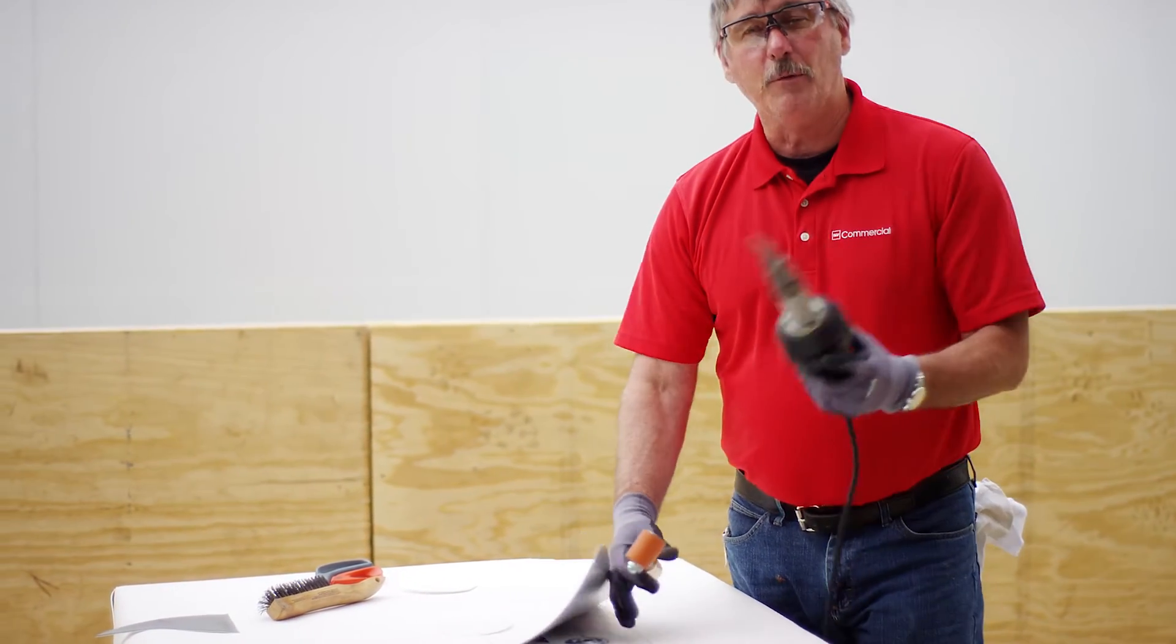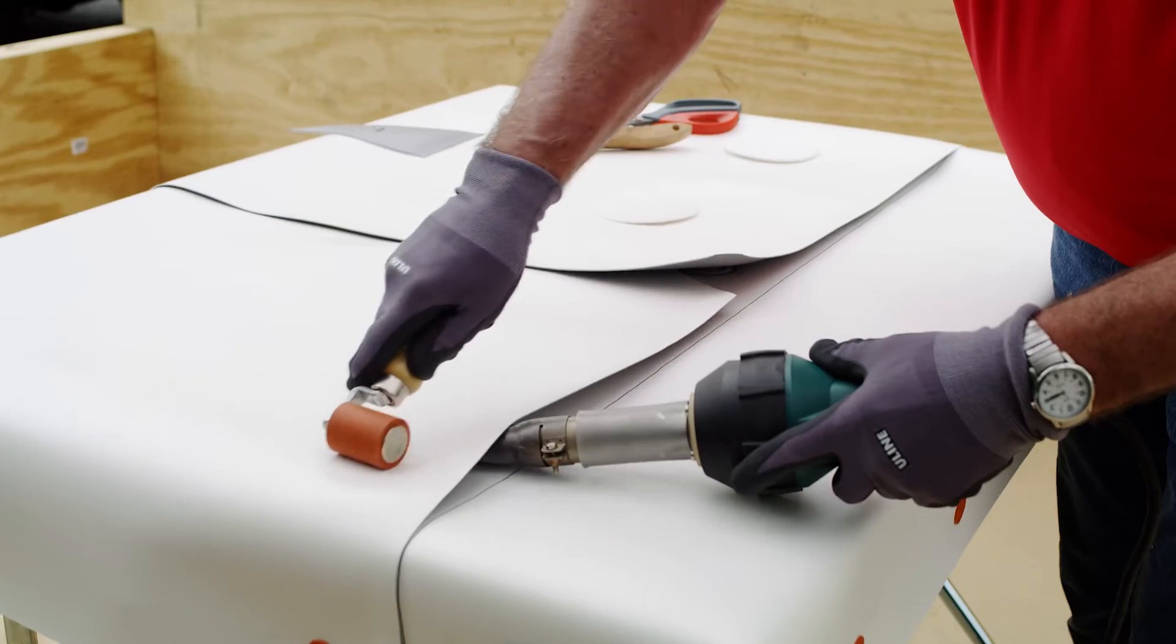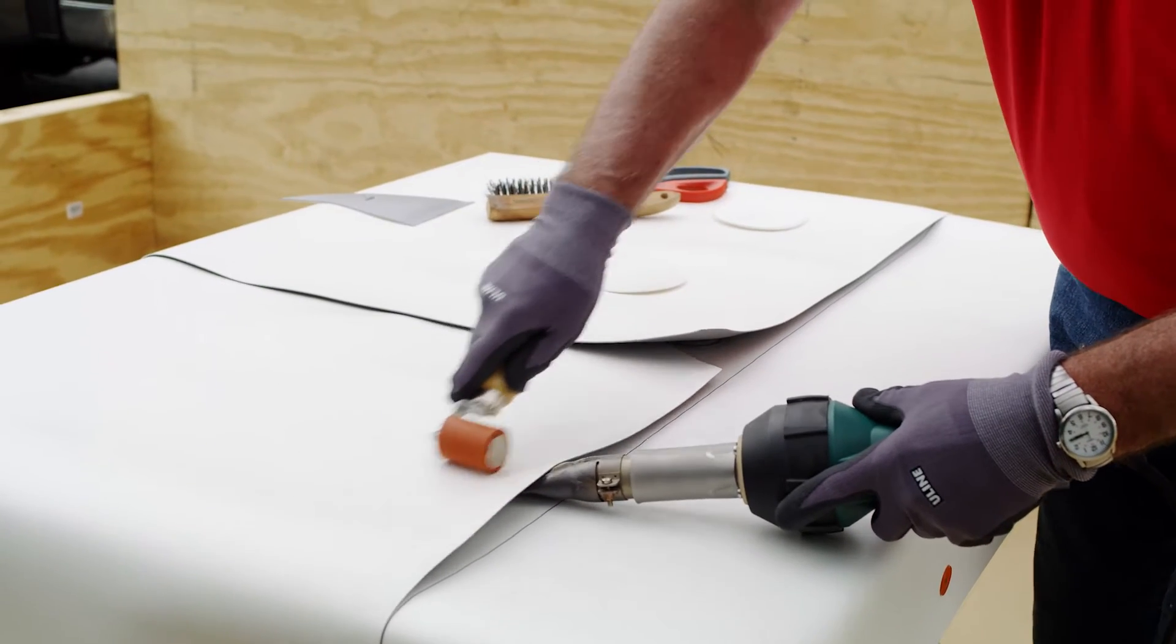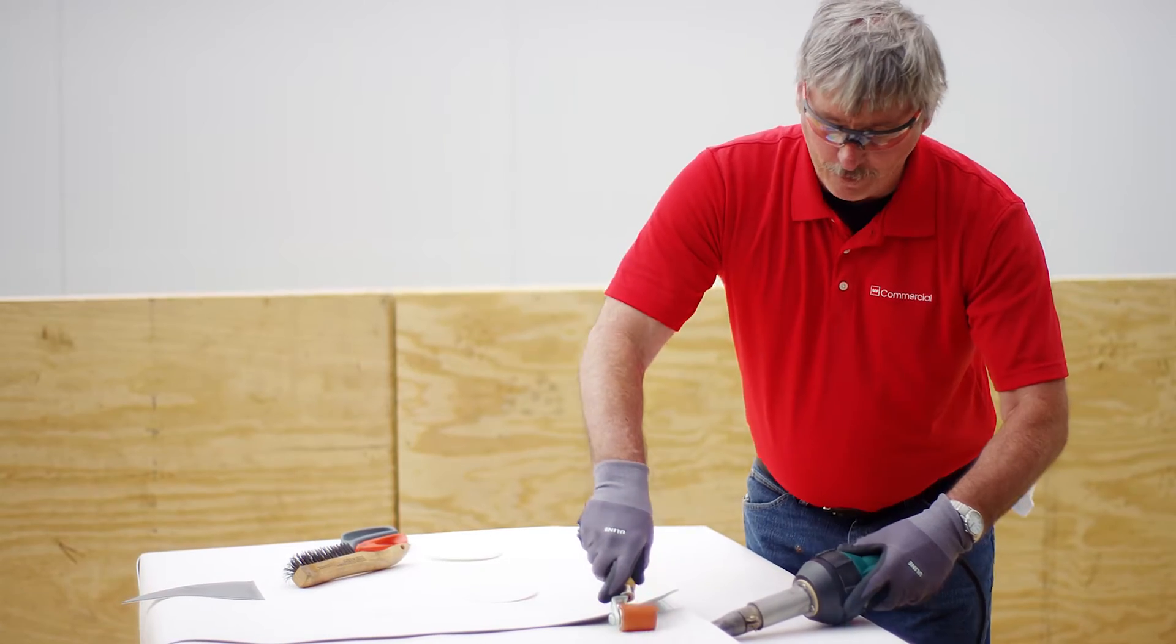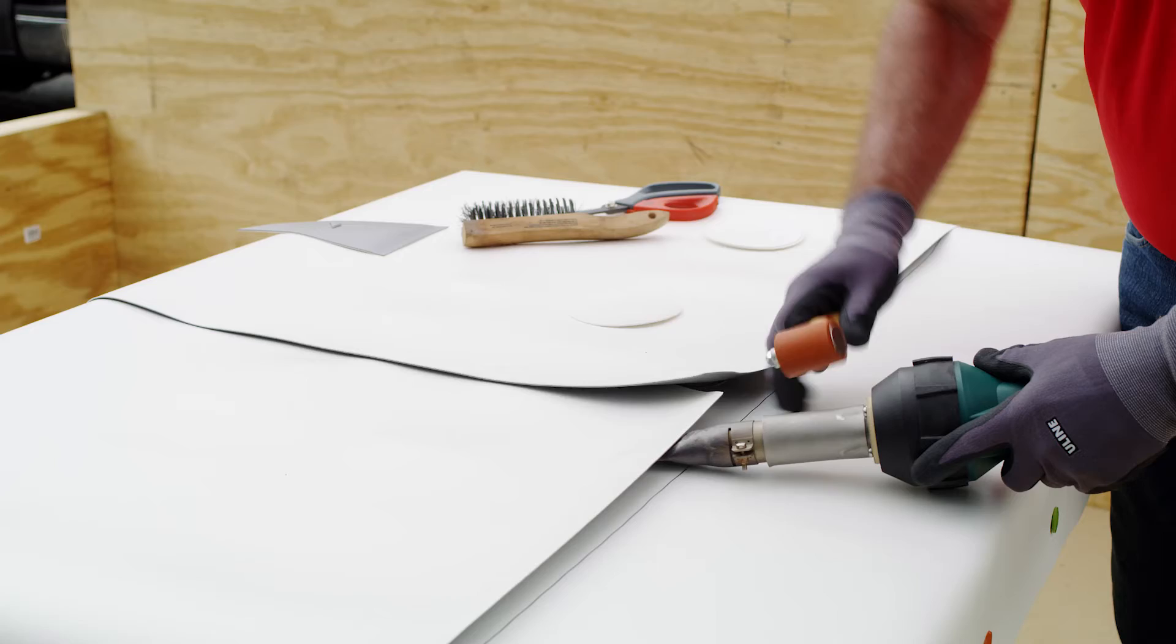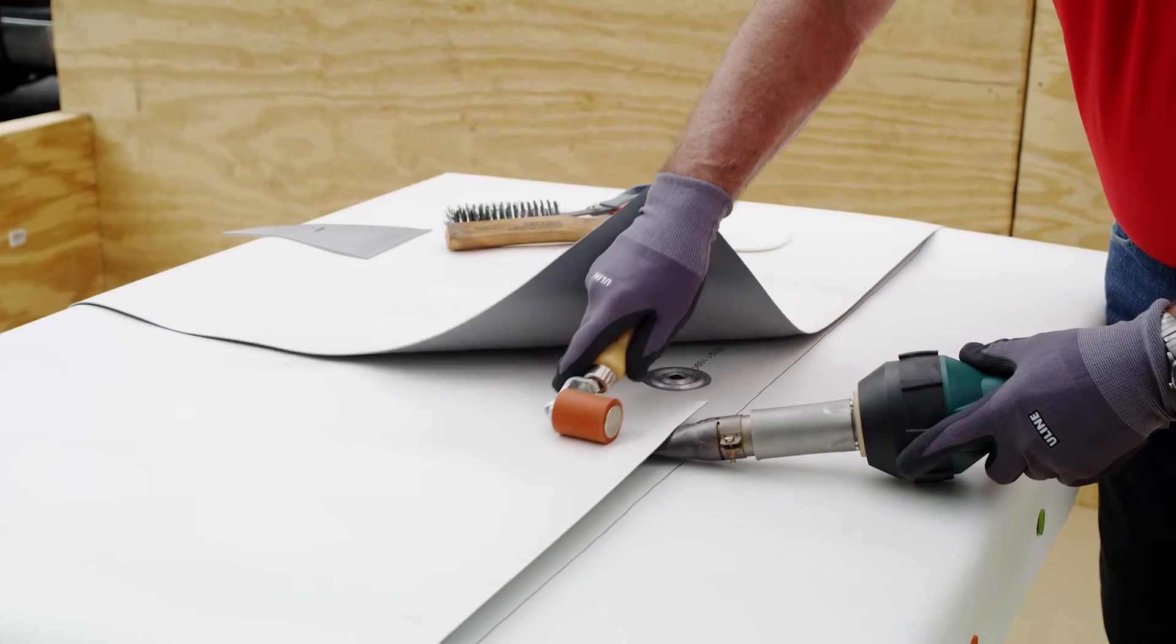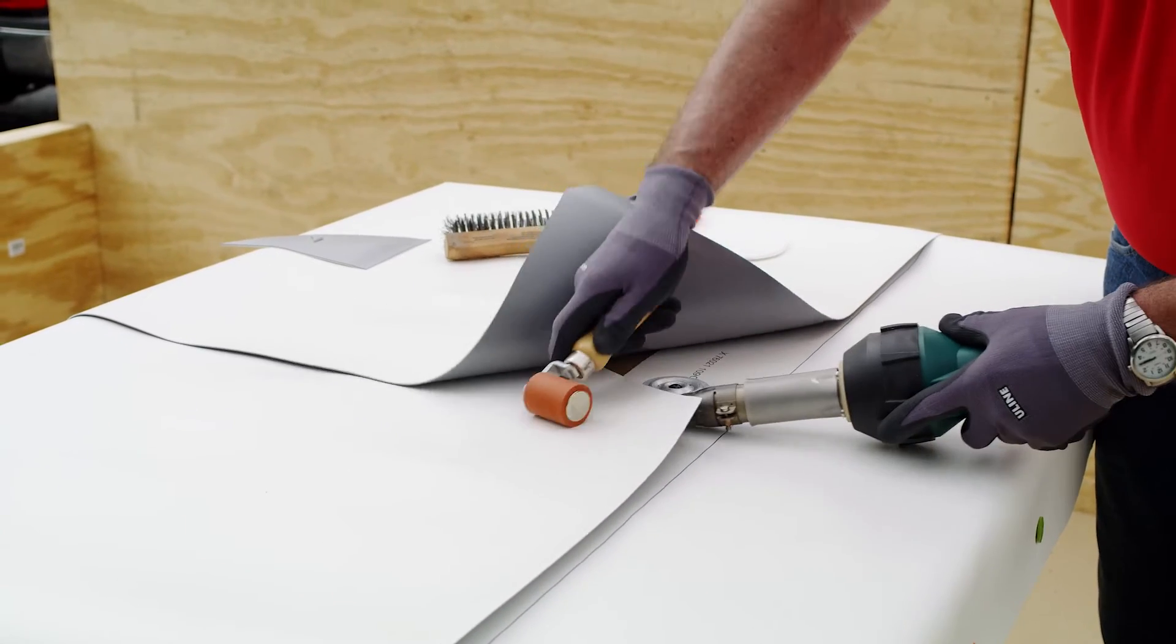Now, it doesn't matter if you're doing PVC or TPO, you're going to do a two-pass weld. Remember, we're only looking for an inch to inch and a half weld. So you pre-weld your air dam, and you can overheat PVC just like you can TPO.